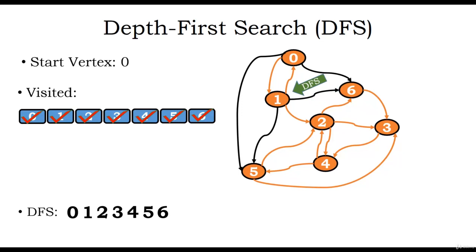From vertex 1 we can reach vertex 5, but vertex 5 is already visited. We can also reach vertex 6, which is also visited. So we move back to vertex 0. From vertex 0 we can visit vertex 5, but vertex 5 is already visited, and we can also visit vertex 6, which is also visited. Once all the vertices are visited and there is no more path to any non-visited vertex, the depth first search algorithm terminates. This is how depth first search algorithm works.